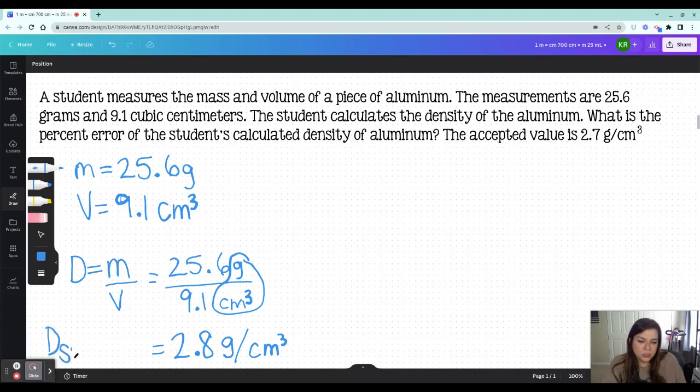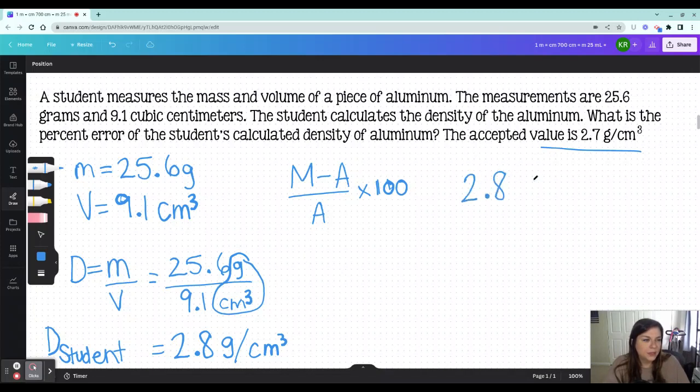So that's what the student calculated. So we're going to label that D sub-student to tell us that this is the density that the student came up with. And it asks, what is the student's percent error? Based on their calculated density, the accepted value is 2.7. So now I'm going to go pop this into the percent error equation. Measured minus accepted over accepted times 100 to turn it into a percent. So the measured value was the 2.8. The accepted value is 2.7. Divide by the accepted value of 2.7. And then we will multiply by 100 to turn it into a percent. So 0.1 divided by 2.7, the subtraction I can do in my head. Now we'll multiply it by 100 to turn it into a percent. And the answer I am getting is 3.7%.